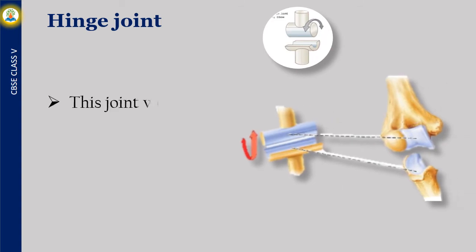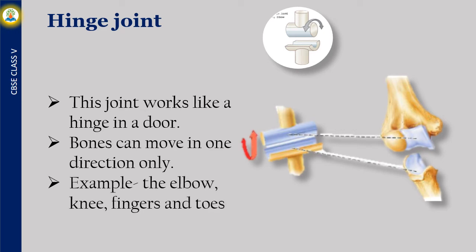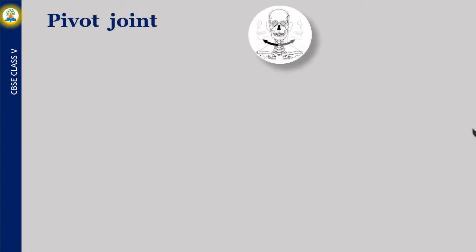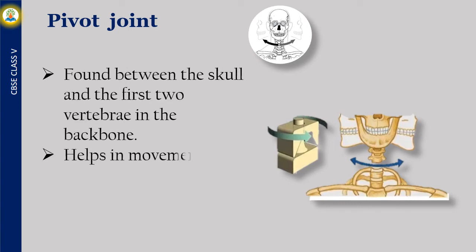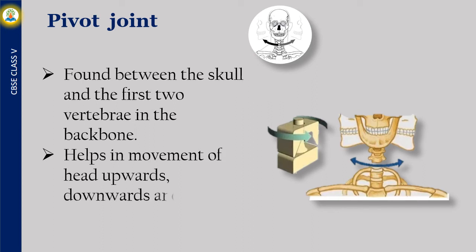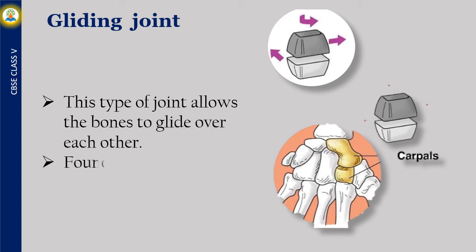A hinged joint works like a hinge in a door — bones can move in one direction only. Examples: the elbow, knee, fingers and toes. A pivot joint is found between the skull and the first two vertebrae in the backbone, helping movement of the head upwards, downwards and sideways. A gliding joint allows bones to glide over each other, and is found in the wrist and ankle.